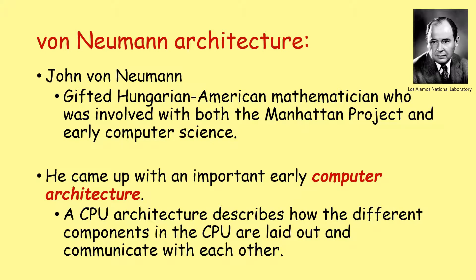Step forward this man, John von Neumann. Von Neumann was a gifted Hungarian-American mathematician who was involved with both the Manhattan Project, the plan to build the atomic bomb, and early computer science amongst many other areas. He was one of the great mathematical geniuses of his time.